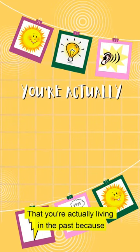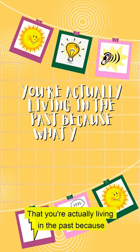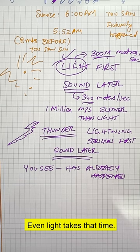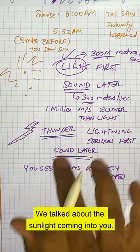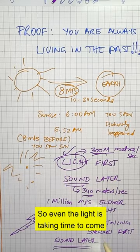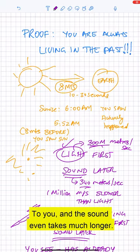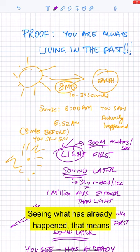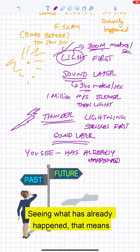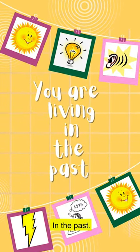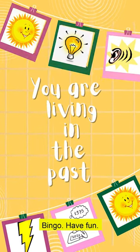Because what you're seeing has already occurred. Even light takes that time, we talked about the sunlight coming into you. So even the light is taking time to come to you and the sound takes much longer. So basically if you think that you're seeing what has already happened, that means that you are living in the past. Bingo, have fun!